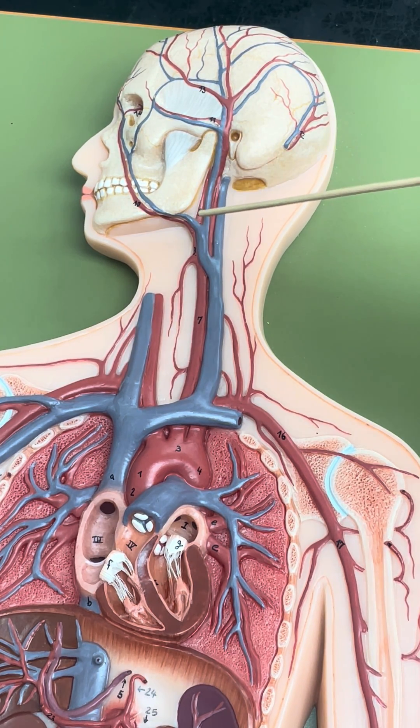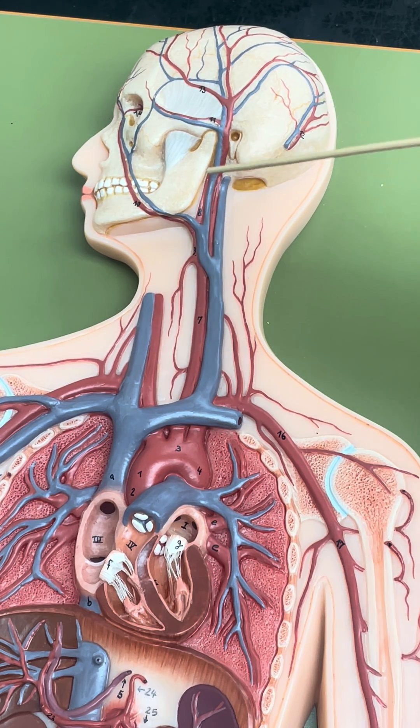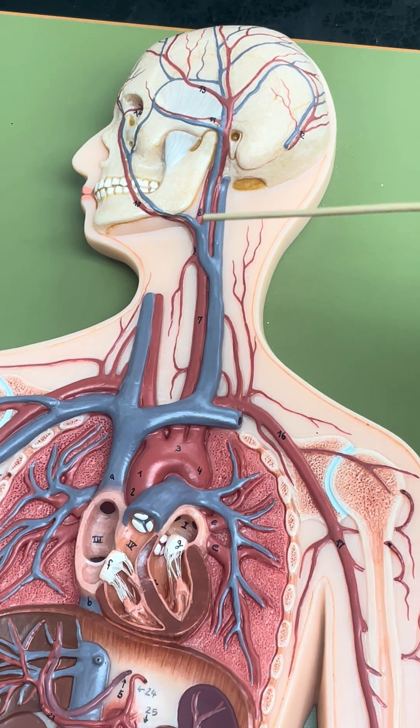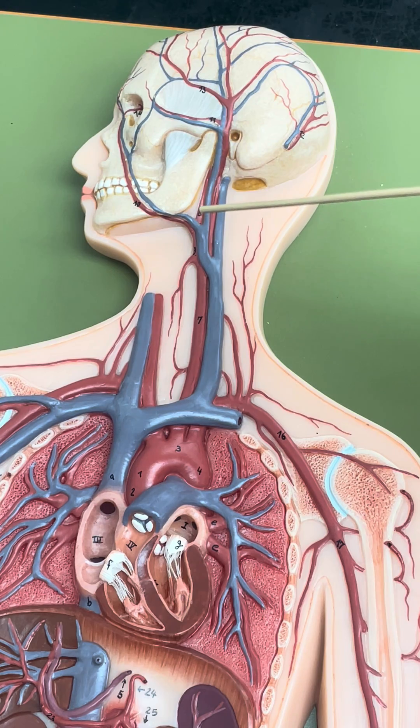And then you can see a little bit here, the internal carotid artery will dive deep into the skull to supply the structures of the brain via the circle of Willis.